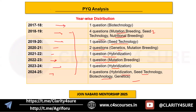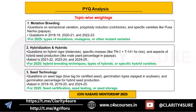Let's now analyze the topics in detail. The first topic is mutation breeding. Questions on somaclonal variation, polyploidy induction — particularly about colchicine — and specific varieties like Pusa Nanha from papaya were asked. This topic has been consistently tested in 2018, 2020, and 2022. For 2025, it is likely to appear again, possibly focusing on different aspects like types of mutation, mutagens, and other mutant varieties.